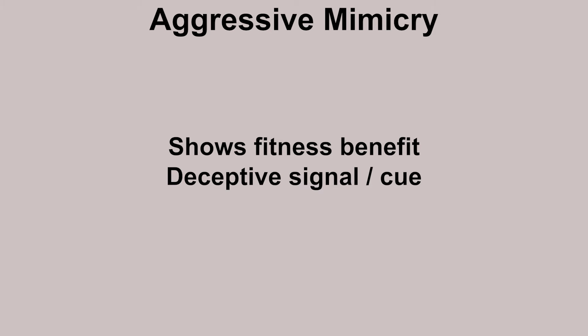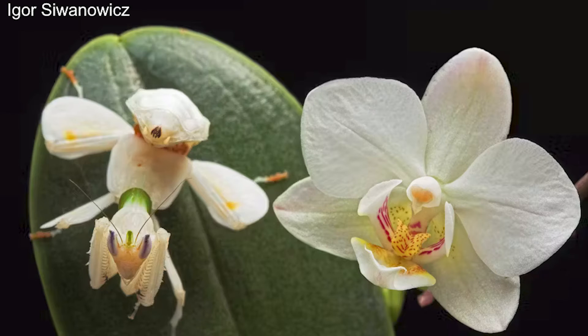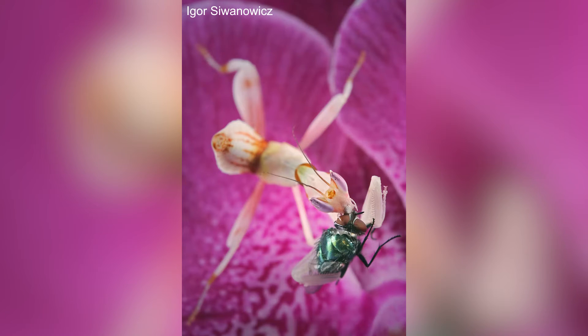Next is aggressive mimicry. In aggressive mimicry, the mimic shows a fitness benefit to the receiver, and the signal is deceptive. For example, the orchid mantis resembles an orchid to attract prey — the signal is the flower's form, pattern, and coloration, which is where the prey normally gets nectar from — and so they approach the mantis and get eaten.